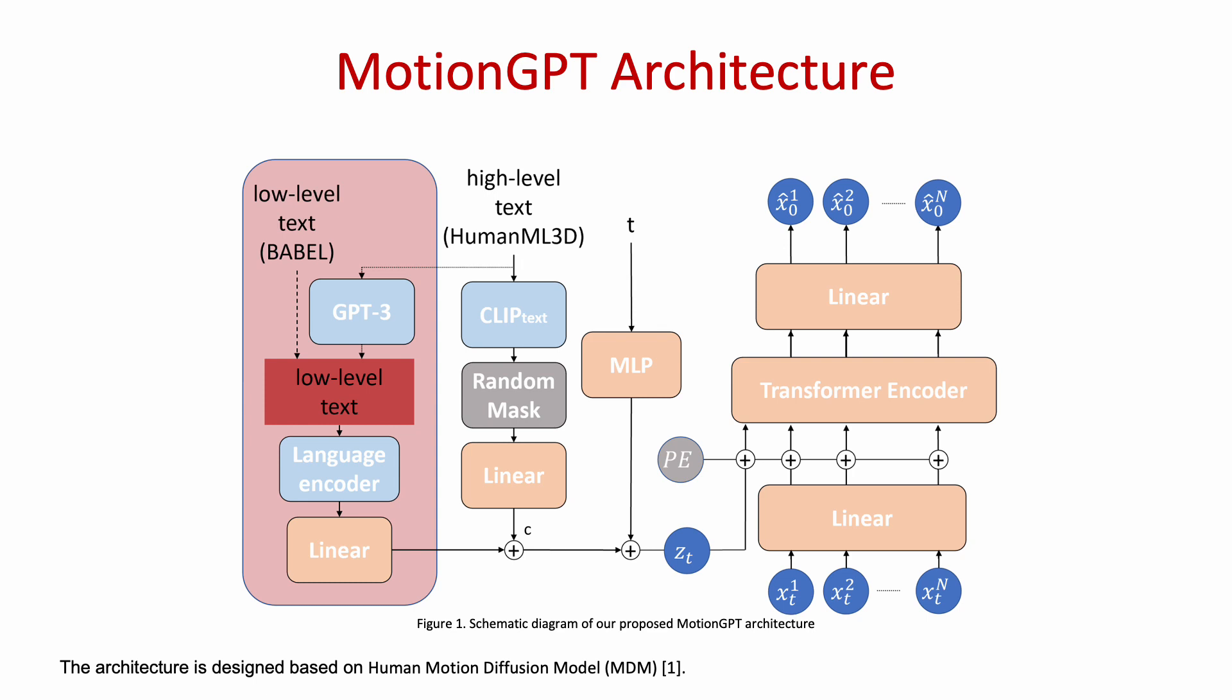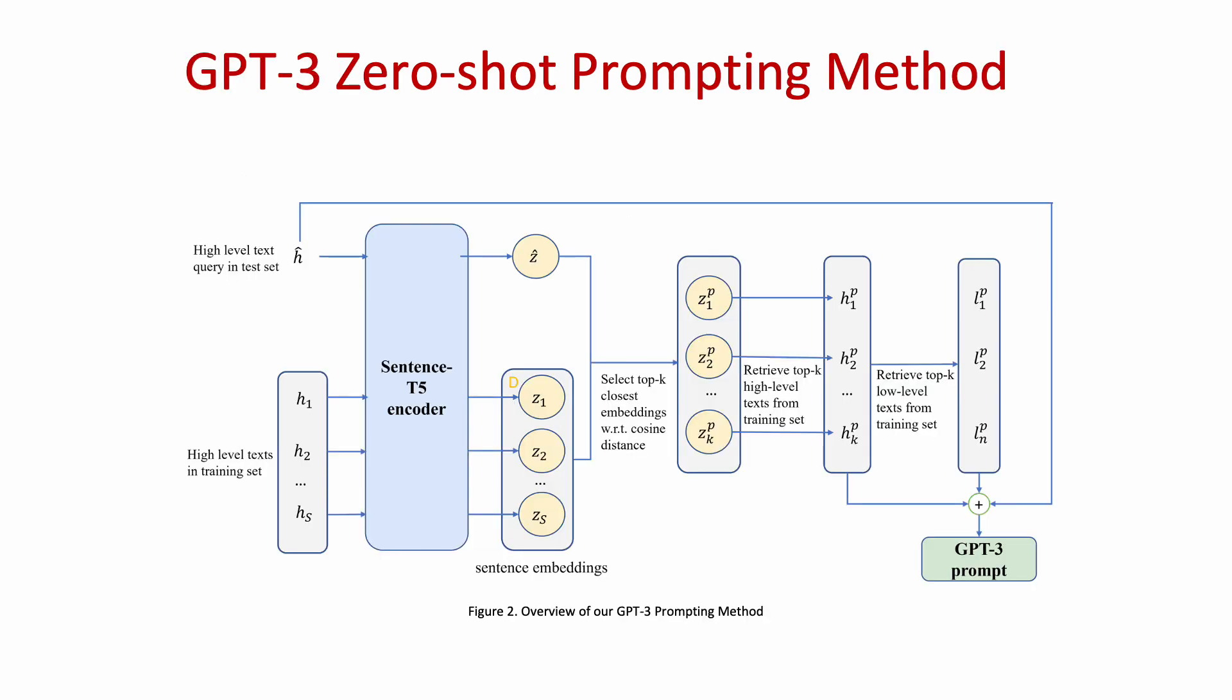For inference, we use low-level text generated by GPT-3 according to the input high-level text. Here is a diagram of how we generate the low-level text using zero-shot prompting with GPT-3 during inference.